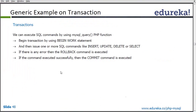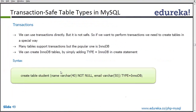We can execute SQL commands using MySQL query, and we can use transactions in PHP as well. We can use the MySQL query function to start, commit, or roll back transactions. Transactions can be executed straightforwardly, but it is always better to use a particular table type. We use InnoDB tables in our case. InnoDB tables are called transaction-safe tables, meaning transactions execute perfectly on these tables and commit and rollback work as per the ACID principle.